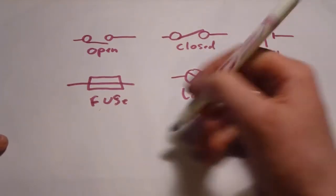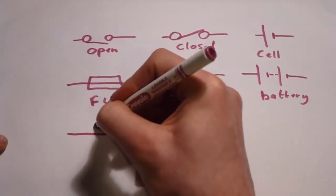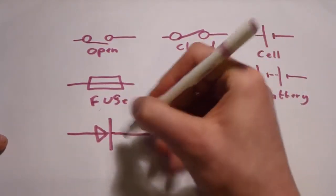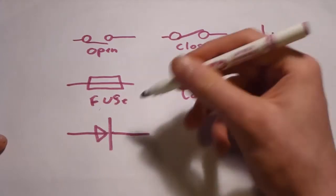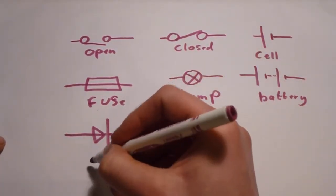After the fuse, we have a diode, which is like a one-way valve. There's an arrow showing which way the current can flow, and like a wall to stop the current from flowing back through.